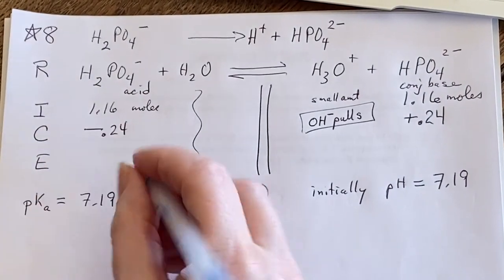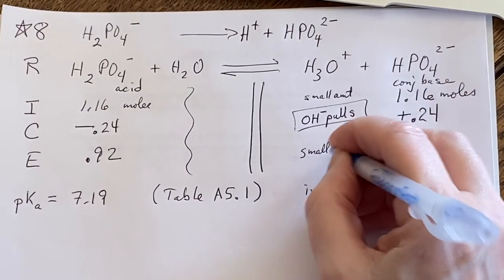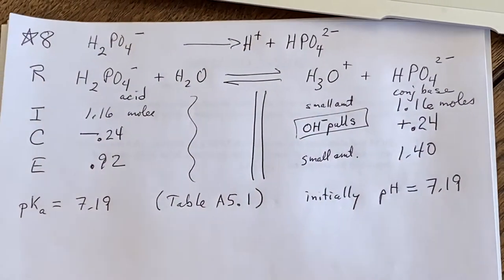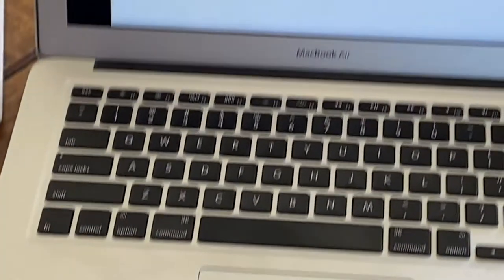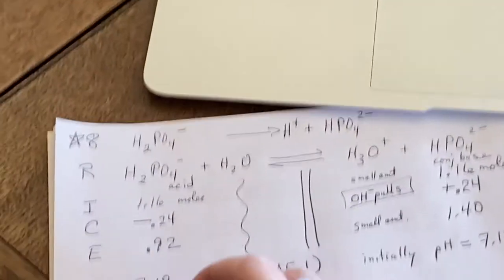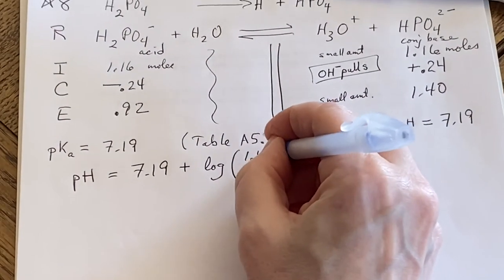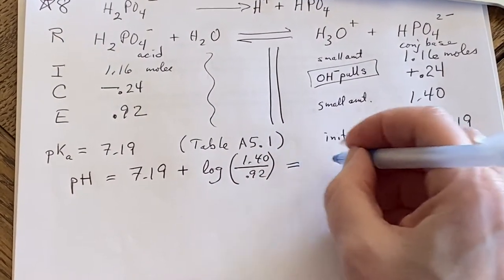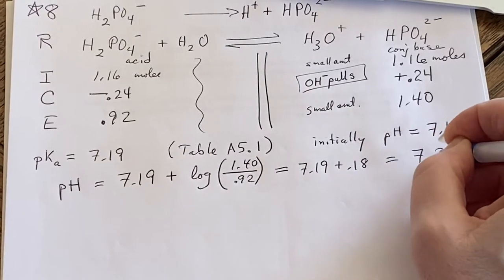And then for the equilibrium, I can just write it down, 0.92. And then, well, it's a small amount. I guess I'll figure that out later. It's still going to be a small amount. And this one will have gone up to 1.40. I can go ahead and say what the pH is. They're talking about the change in pH. Well, I know what it started at, and now I'll just figure out what it was. The pKa plus the logarithm of the base, that was the 1.40, over the acid, 0.92. When I get done using my calculator on all of this, it'll be 7.19 plus 0.18 is 7.37.